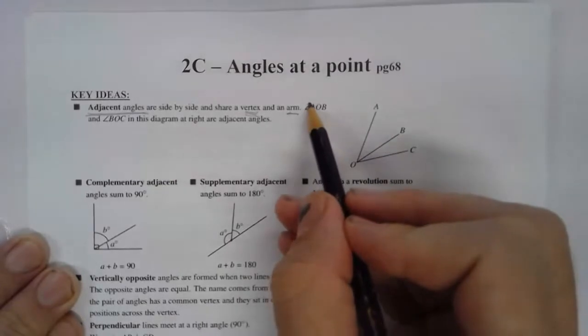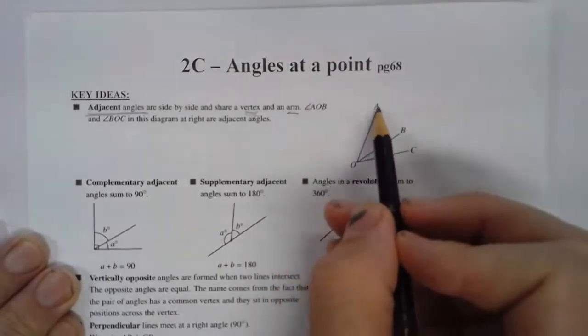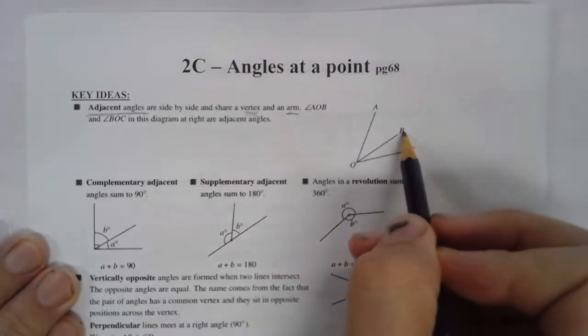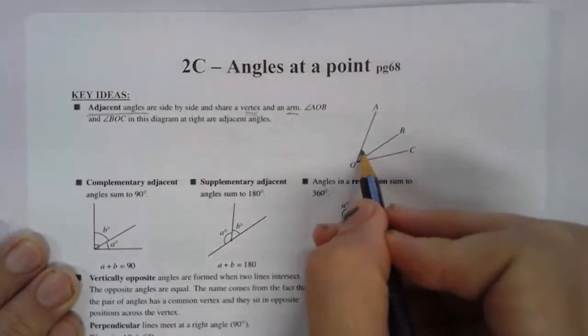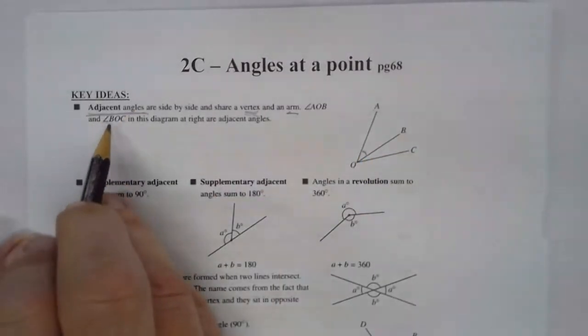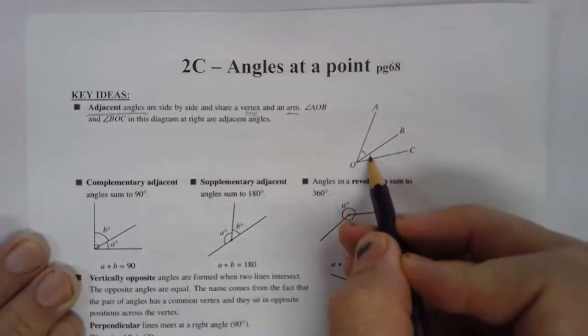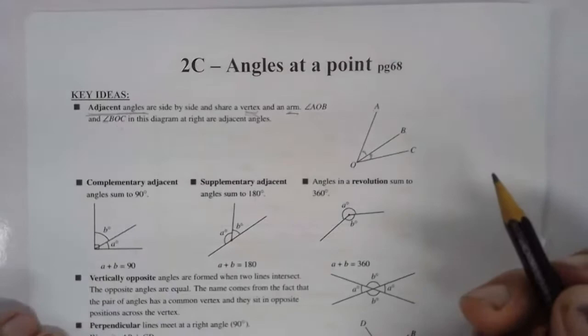Looking at the example we have here, here's the symbol for angle AOB. From point A, there's the vertex in the middle to B. So this angle is next to, or adjacent to, angle BOC. BO is the vertex C. So these two angles are adjacent to each other.